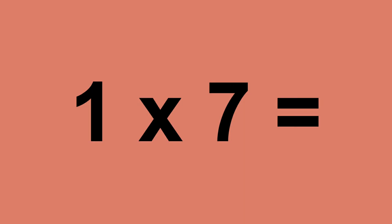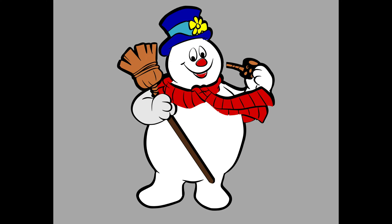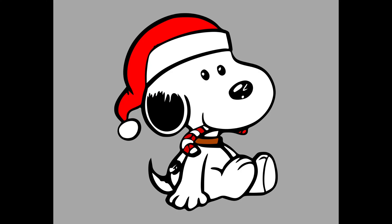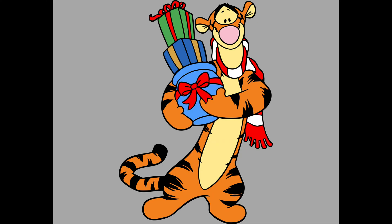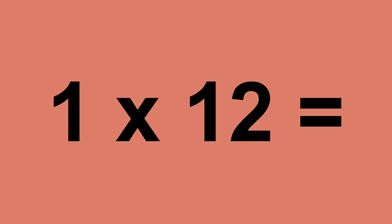One times seven equals seven. One times eight equals eight. One times nine equals nine. One times ten equals ten. One times eleven equals eleven. One times twelve equals twelve.